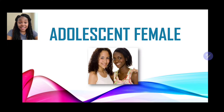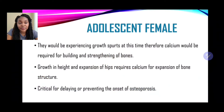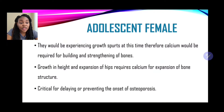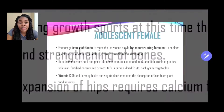Let us look at the nutritional needs for the adolescent female. We briefly touched on a few when looking at adolescents in general, but let us look at the defined needs of the adolescent female. They would be experiencing growth spurts, therefore calcium would be required for building and strengthening bones. Growth in height and expansion of hips requires calcium for expansion of bone structure. It is also critical for delaying or preventing the onset of osteoporosis, a condition where the bones become porous and brittle due to a lack of calcium or vitamin D.